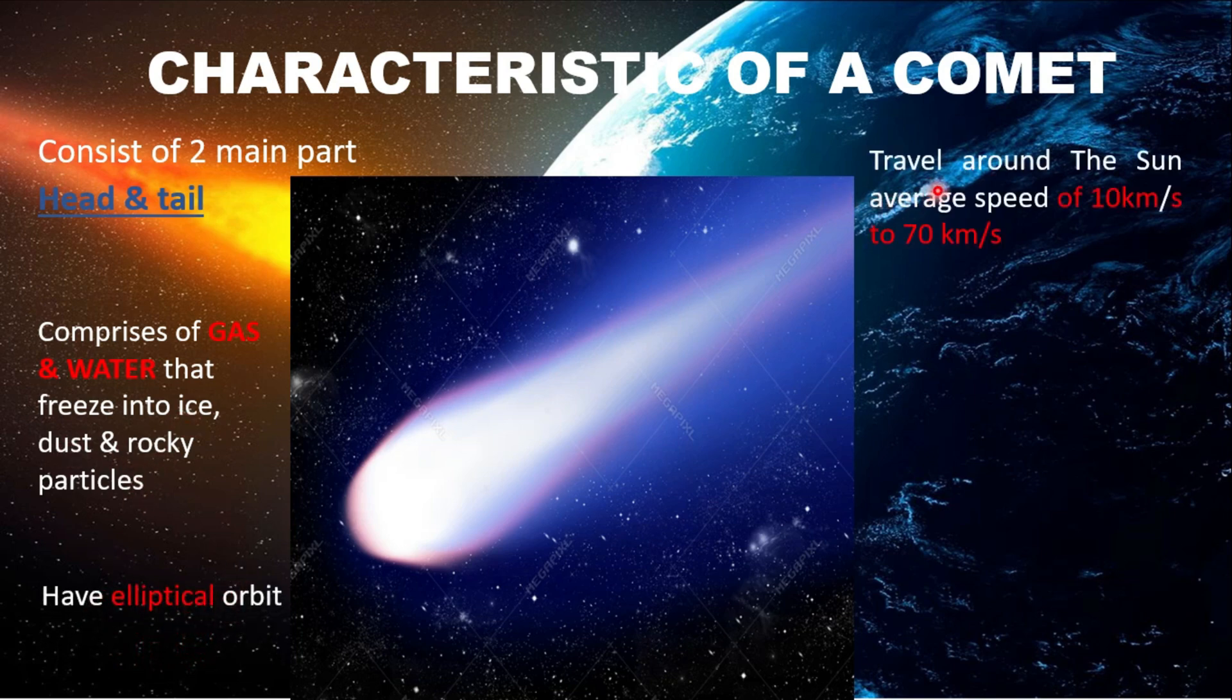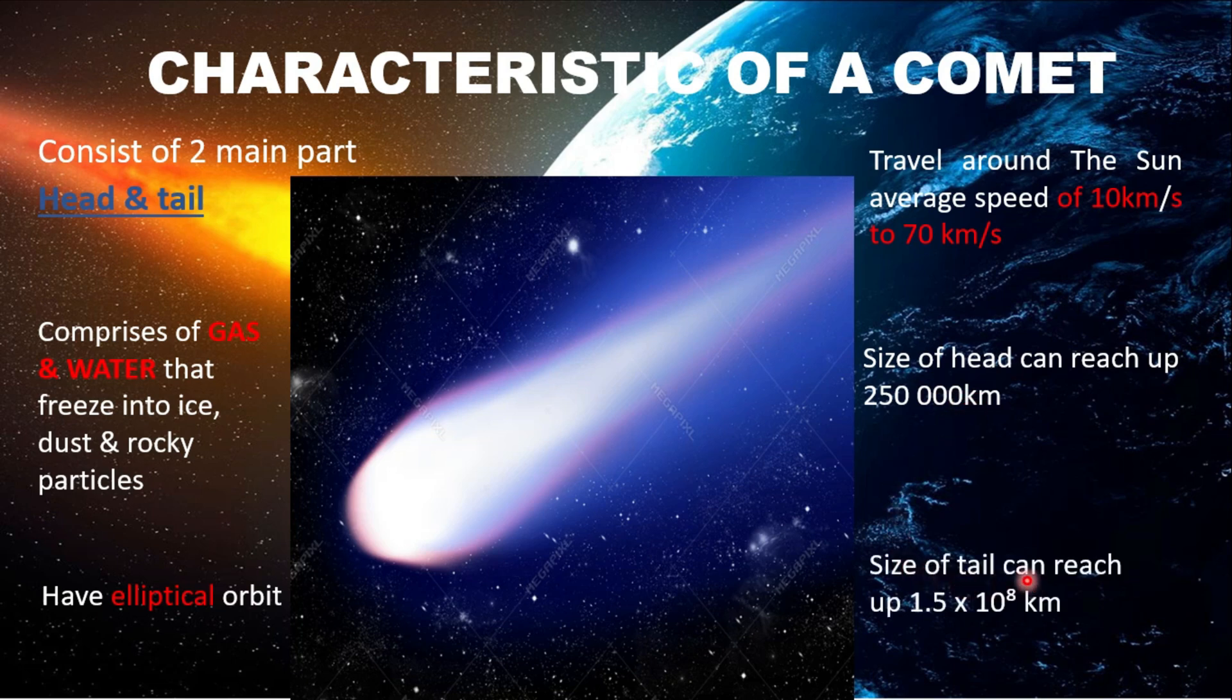Have elliptical orbit. It travels around the Sun, average speed of 10 km per second to 70 km per second. Size of head can reach of 215,000 km, and the size of tail can reach of 1.5 times 10 power of 8 km.